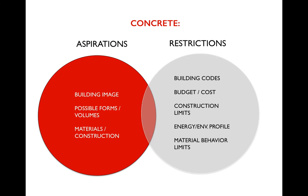With all of our material discussions, we'll be looking at the aspirations — what we want to do, the performance criteria we want — but also the restrictions, the things we have to work against to achieve those aspirations. In every case we're looking at functionality, aesthetics, cost, durability, and environmental impact. We're always designing in the contexts of building codes, client budgets, what the local construction industry is capable of, the performance and limitations of the material, and increasingly the embodied and life cycle energy costs. Concrete, steel, timber, and masonry all have advantages and disadvantages.